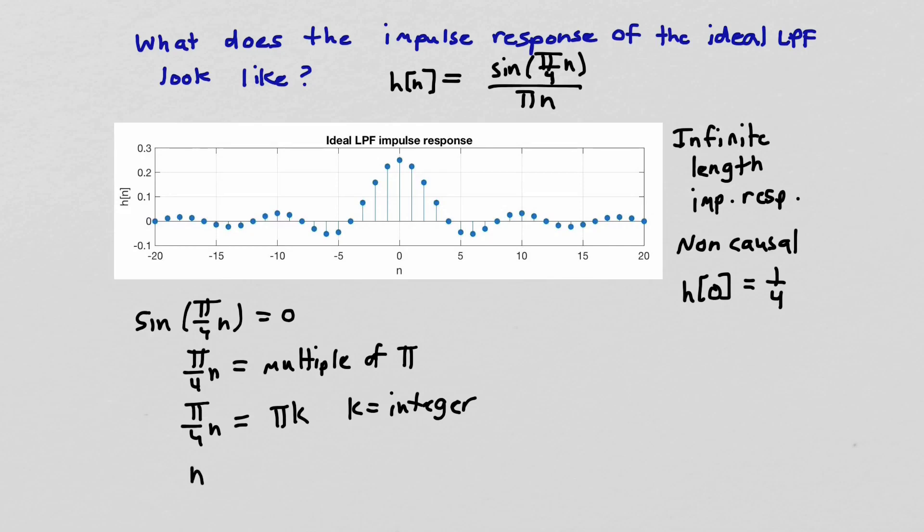So we could just solve for the values of n where this is true. So that'll be πk over π/4. And that just reduces to, the π's cancel out and it reduces to 4k. So this is at multiples of 4, because k is an integer. So at any multiples of 4, we should expect the impulse response to be 0. And we see that that is indeed true.